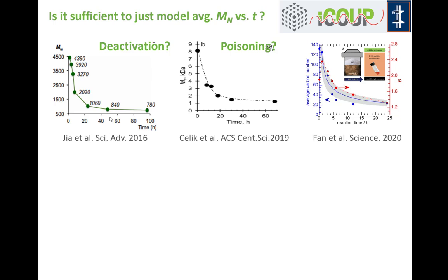Before we dive into population balance equations, let's see whether we could get by with something simpler. Instead of keeping track of the total concentrations of each individual molecular weight, maybe we could just keep track of the average molecular weight and how it changes versus time. Many of the early studies in polymer upcycling did exactly that — reporting average molecular weight as a function of time. Paper after paper, they saw that initially the molecular weight would drop quickly, then slow down and sort of plateau.